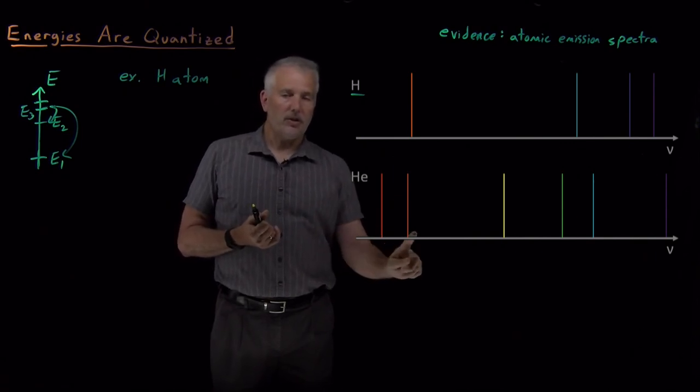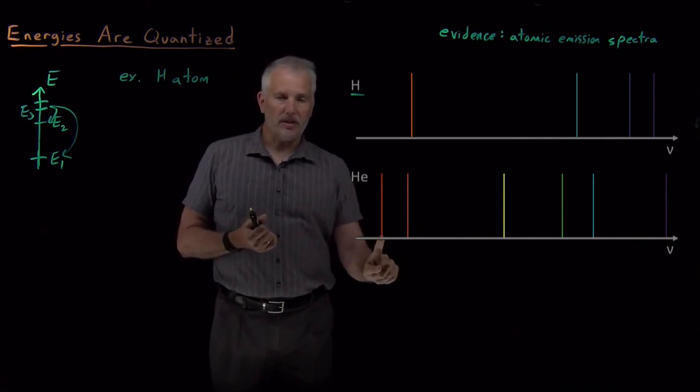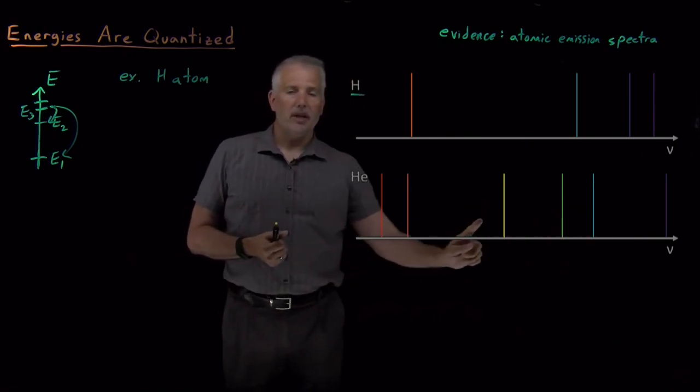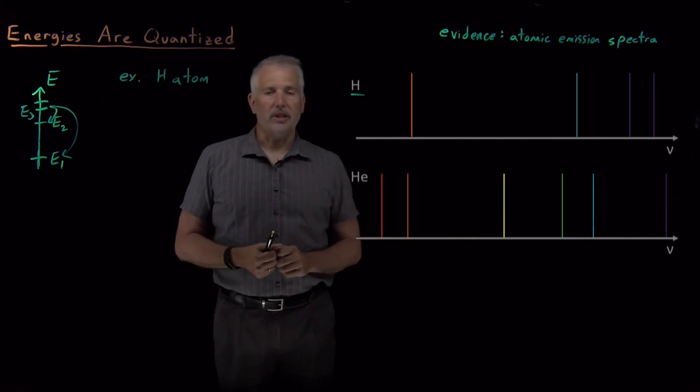Also, they're still discrete and quantized. Only this color of light or this color of light or this color of light, and so on, can be given off by helium, not anything in this range where we don't see any emission.